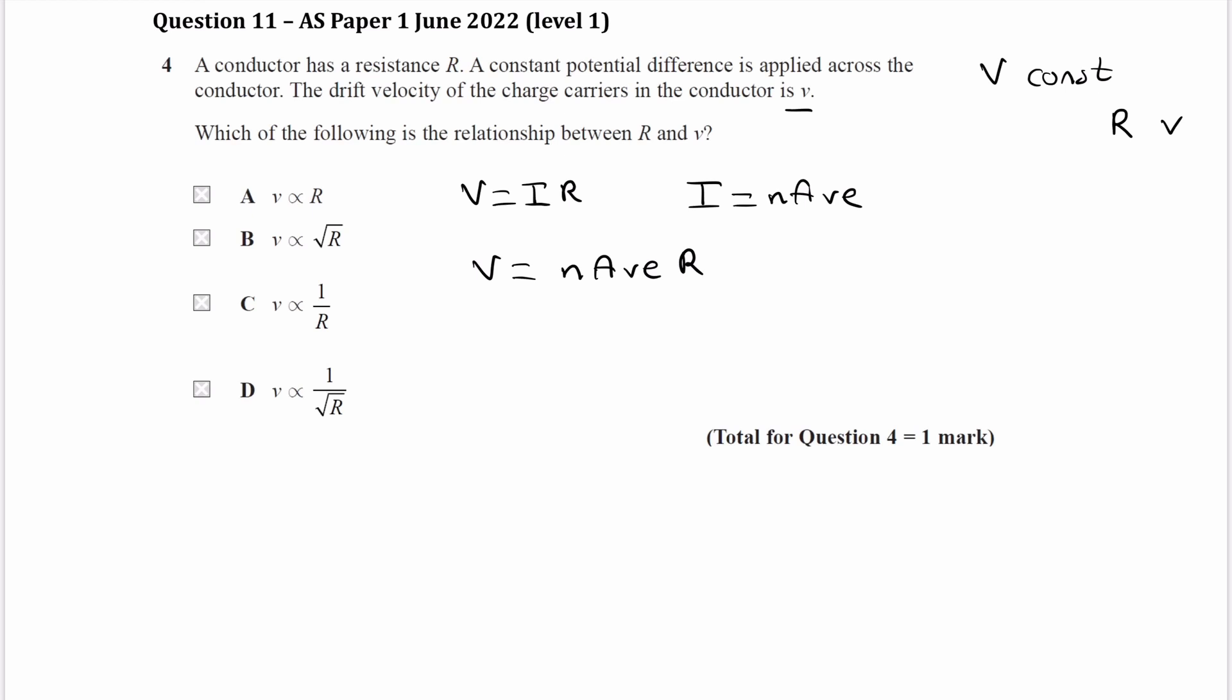We're trying to get a relationship between R and v. We have v as the subject of our proportionality. So I'm going to rearrange this equation for the drift velocity. So v is equal to the voltage divided by the charge carrier density times cross-sectional area times charge of the electron times the resistance.